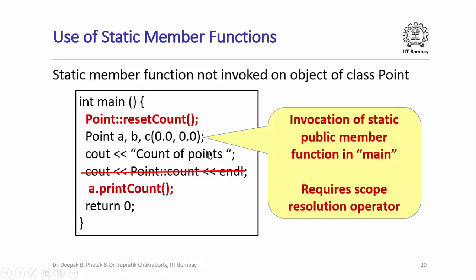Finally, I want to read out the count of points created. I can no longer use Point::count directly because count is now private and inaccessible from main. Instead, I call the non-static member function print_count on one of the objects — for example A.print_count(). This non-static member function can access the private static data member count and print its value.